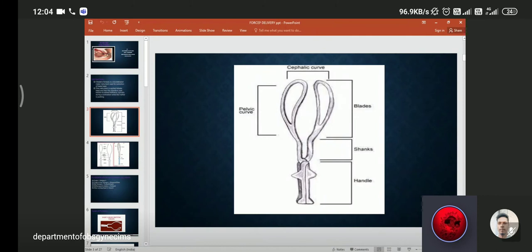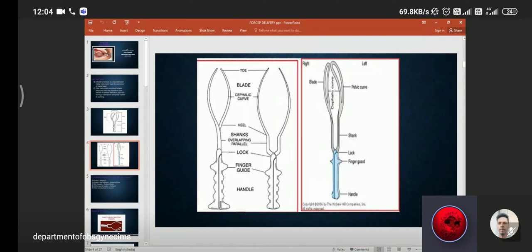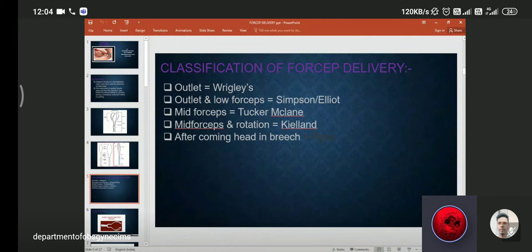These are the two types: outlet and mid cavity forceps. The long one is mid cavity forceps and the small one is outlet forceps, also known as Wrigley forceps. Then outlet and mid forceps, that is Simpson or Elliot forceps. Third one is mid forceps, that is Zucker or McLean forceps. Mid forceps and rotating forceps are Kielland, and after coming head of breech is removed by Piper forceps.